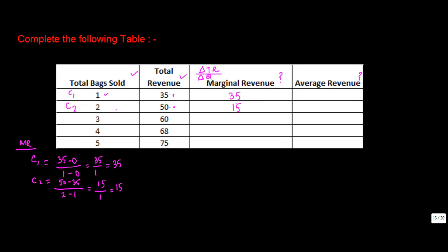Similarly, in case 3, the revenue has increased from 50 to 60. I can do it again like this here. C3. 60 from 50. 60 minus 50. This is the change in total revenue divided by change in quantity. Again, quantity has increased from 2 to 3. So 10 upon 1 is equal to 10.